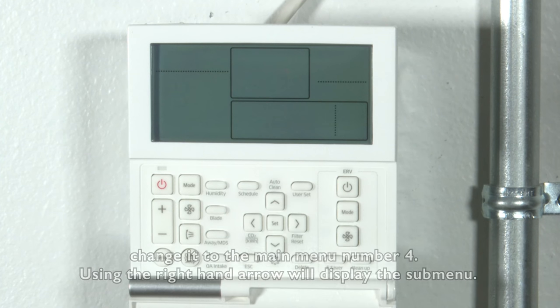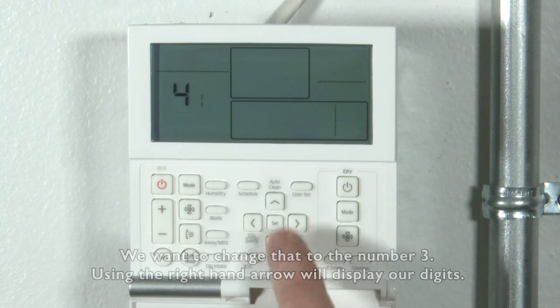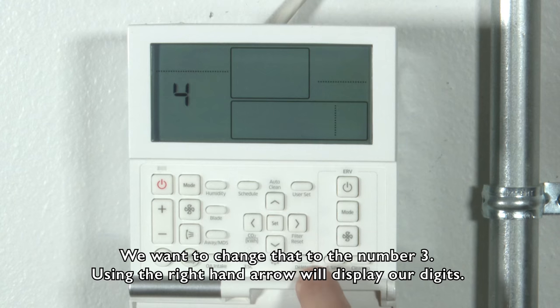Using the up arrow, change it to main menu number four. Using the right hand arrow, we'll display the sub menu. We want to change that to number three. Using the right hand arrow, we'll display our digits.